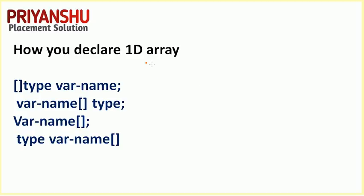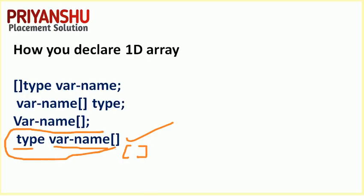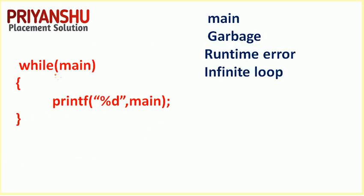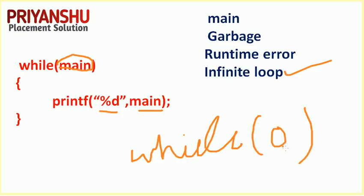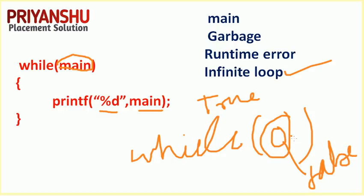For 1D array declaration: the correct syntax is data type, then array name, then brackets with array length. That is the correct syntax. Now for the next question: while(main) print %d main — this again goes to an infinite loop. In C, if we write while(0) it is false; any non-zero value is treated as true. So while(main) is always true, giving an infinite loop.